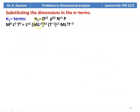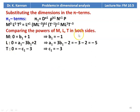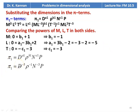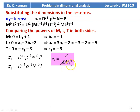Substituting dimensions in pi1: M⁰L⁰T⁰ = L^a1 · (ML⁻³)^b1 · (T⁻¹)^c1 · ML²T⁻³. Comparing powers of MLT: for M, 0 = b1 + 1; for L, 0 = a1 − 3b1 + 2; for T, 0 = −c1 − 3. Solving: b1 = −1, c1 = −3, a1 = −5. Therefore pi1 = d⁻⁵ · rho⁻¹ · n⁻³ · p, which gives pi1 = p / (rho · d⁵ · n³).